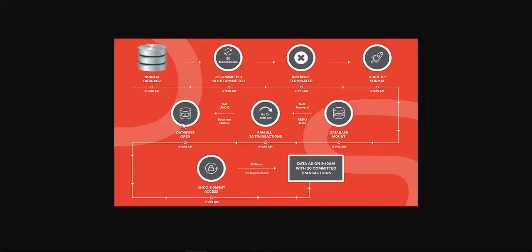After the database is opened, it will go and access the undo segments. With the help of the information available in the undo segments, it will perform the rollback of those 10 uncommitted transactions. At the end of the database open stage, only the data as of 9:10 a.m. with 20 committed transactions will be available in the system. This is how the database performs instance recovery.